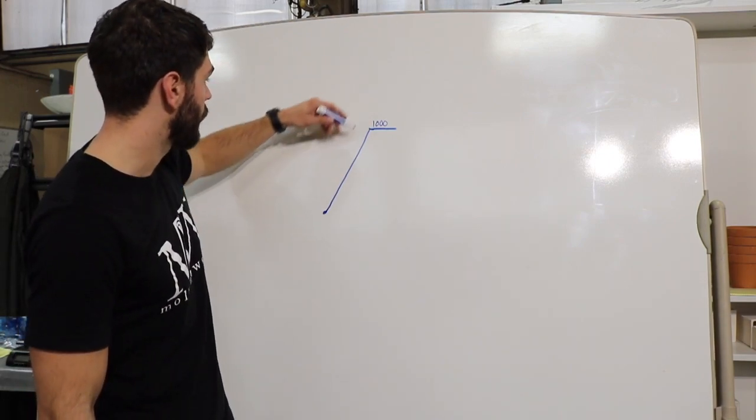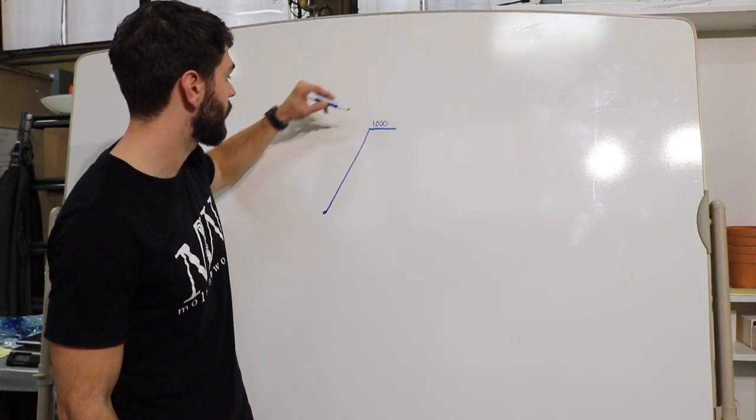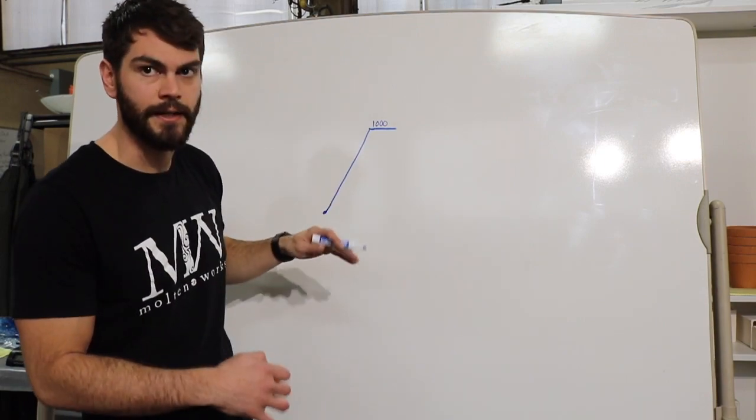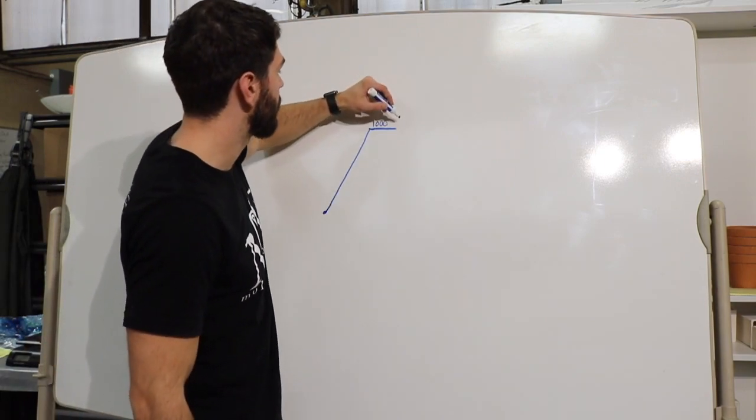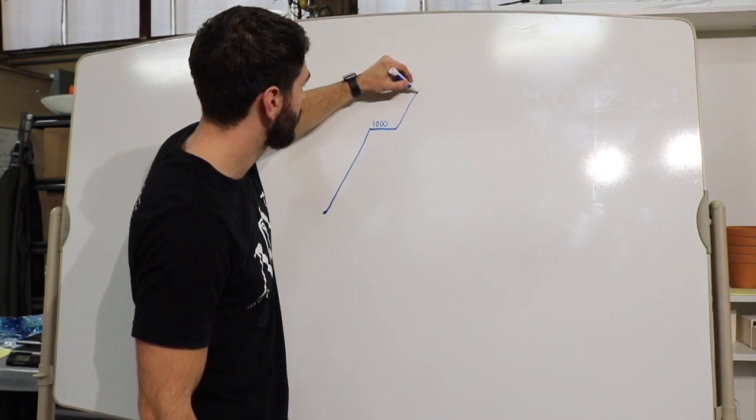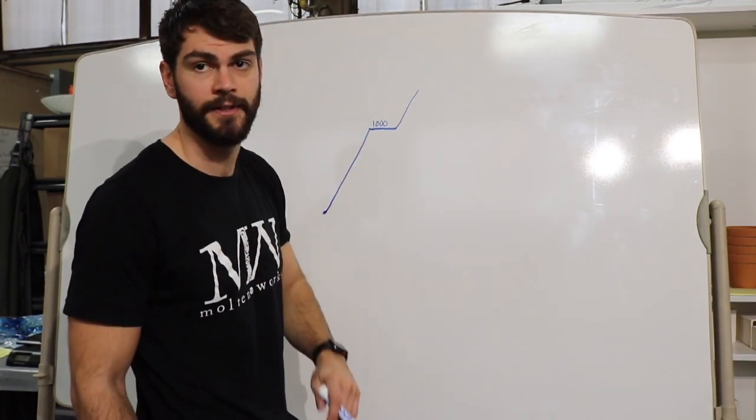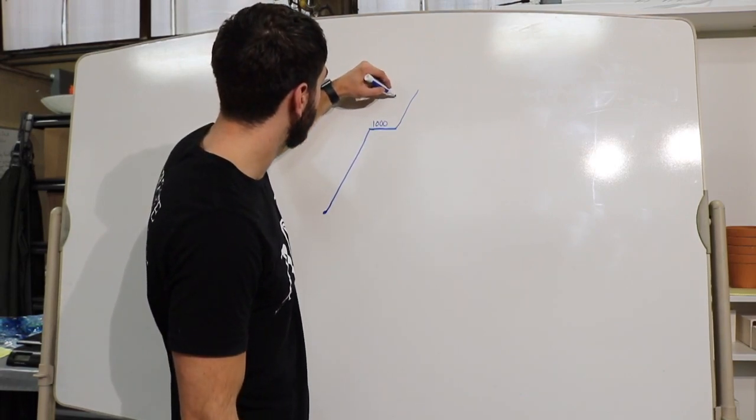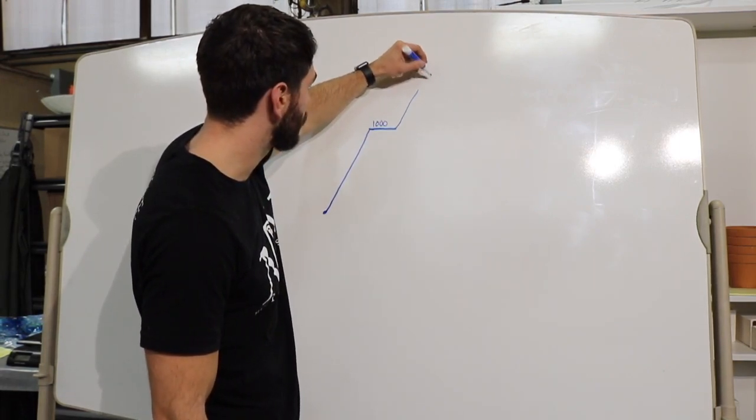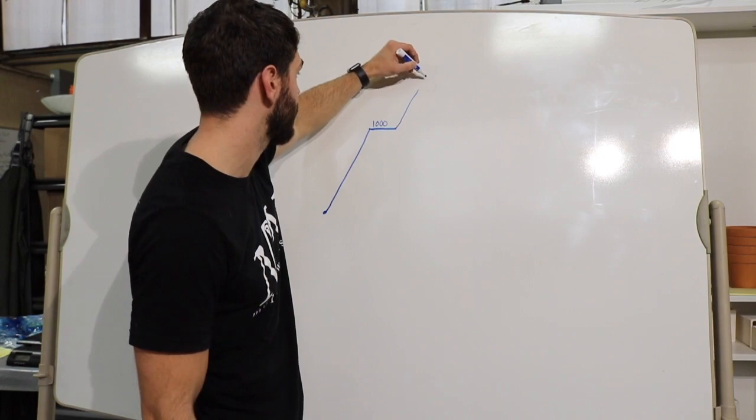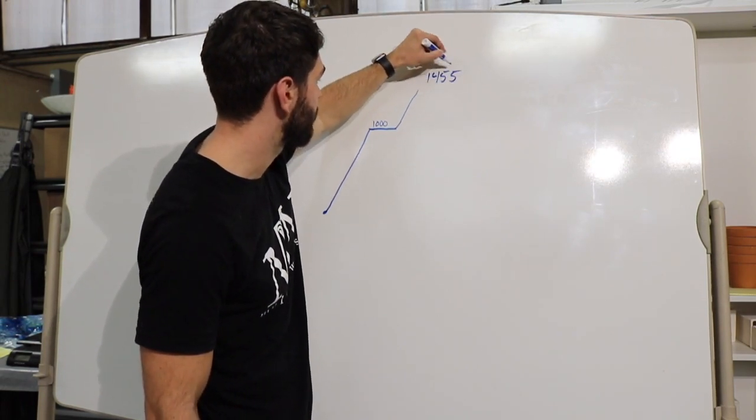Okay, so once you ramp up here you get to a thousand. We'll get to the timing on it in a second, but then you're ready to go to the temperature that you desire. So the glass is going to get soft, you can now ramp all the way up to, let's say we're full fusing in this case, so we're gonna go 1455.